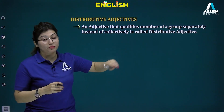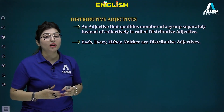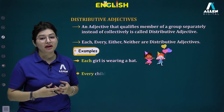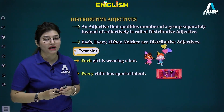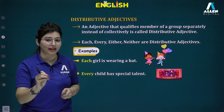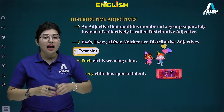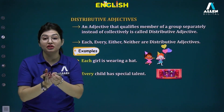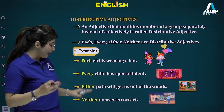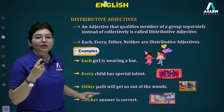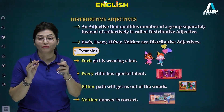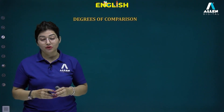Distributive adjectives deal with distribution and include: each, every, either, and neither. 'Each girl is wearing a hat' — talking about members individually one at a time. 'Every child has special talent' — considering the whole group collectively as one. 'Either path' refers to choosing one out of two. 'Neither answer is correct' means choosing zero out of two.